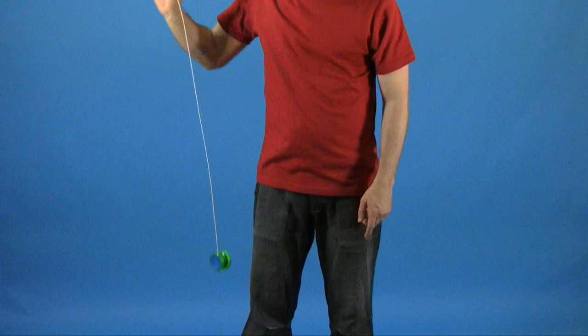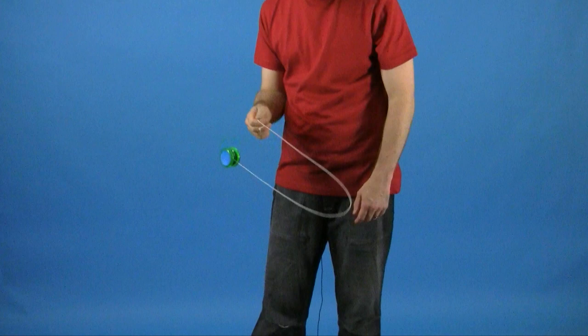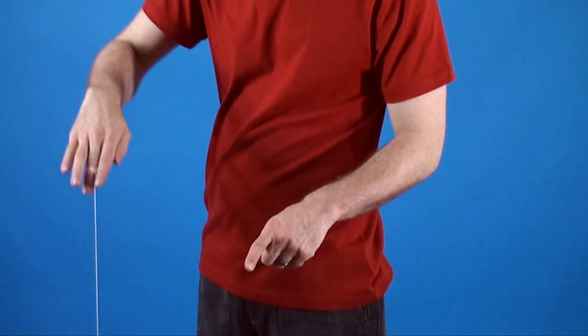Now the hook is going to be different because we are going to take both strings. They kind of form a hoop just like this. We are going to take both strings in that hoop and allow them to run right into our finger and actually fold over it.